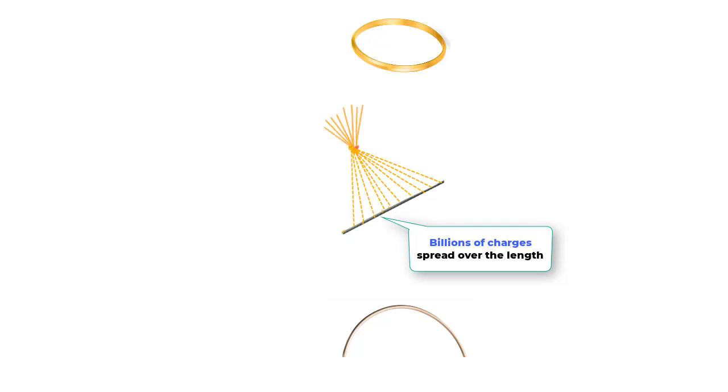You clearly see that this is not just a collection of a few million or a billion charges but charges spread over the length of the rod or circumference of the ring. You cannot do vector addition for each particle to find the net force or electric field the way we did for a smaller number of charged particles earlier.